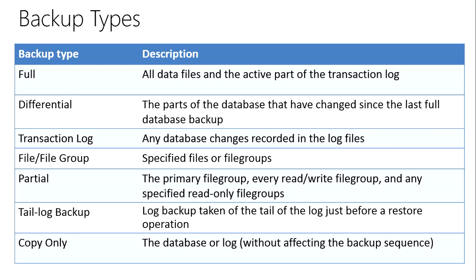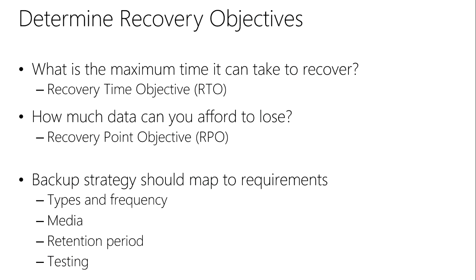Using a combination of these backup types gives us various strategies. What determines the right strategy is largely the RTO and RPO we're trying to achieve. RTO — recovery time objective — is the maximum time it can take to recover: how quickly do you need to be back up and running? RPO — recovery point objective — is how much data you can afford to lose. None is usually the answer, but the reality is that if you could restore from last night, would that be acceptable? It's not a guaranteed amount of data loss — it's a time period in which you could have data loss.